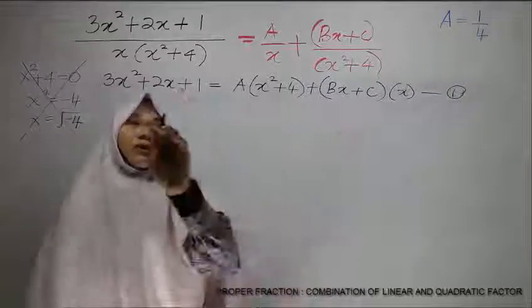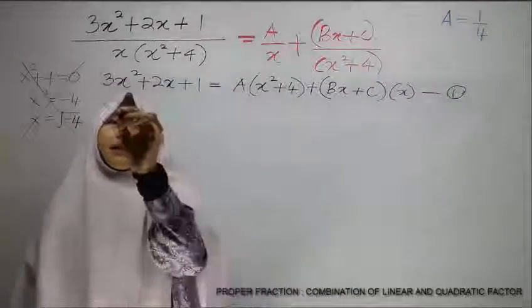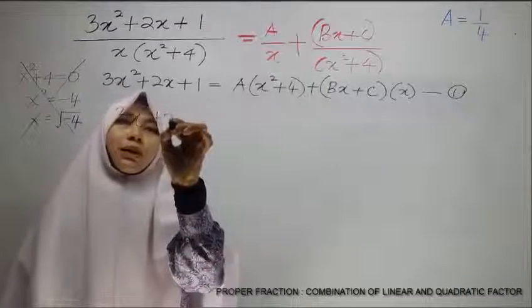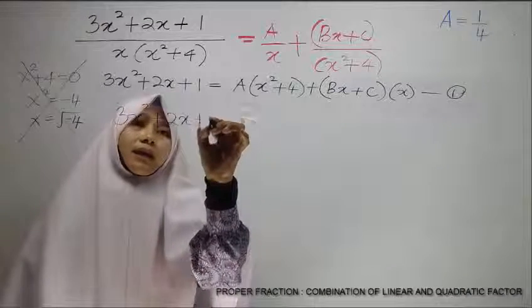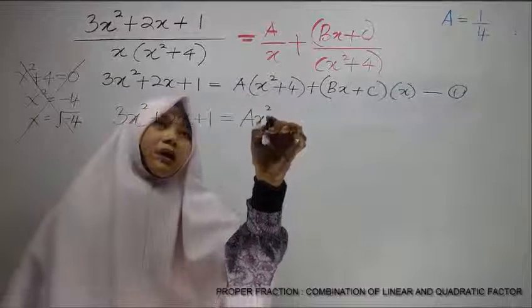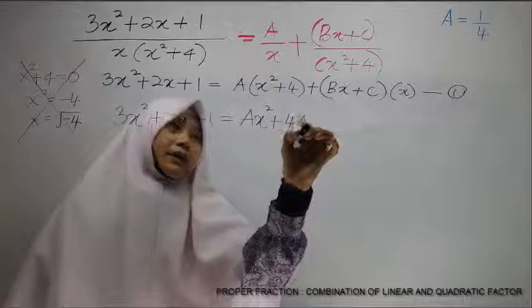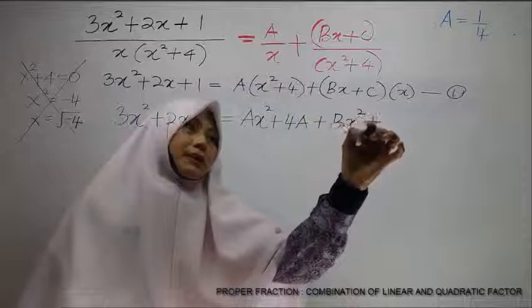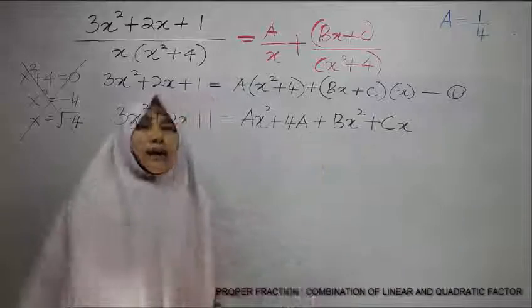That means, for B and C, we need to use coefficient method. So equation 1 here, we need to expand completely. So we have 3x squared plus 2x plus 1 equals to Ax squared plus 4A plus Bx squared plus Cx.